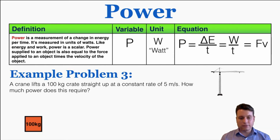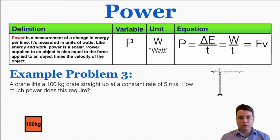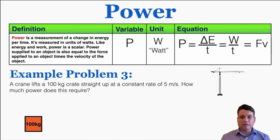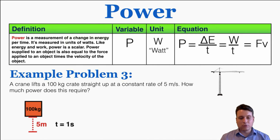Moving on to example problem three: a crane lifts a 100 kilogram crate straight up at a constant rate of five meters per second. How much power does this require? I'm going to solve this one in two different ways. The first way uses the power equals energy divided by time equation. To do that, I need to know how much the energy is changing, and since the crate is gaining potential energy, I need to know how much height it gains in how much time. Going up at five meters per second, it gains five meters in exactly one second.